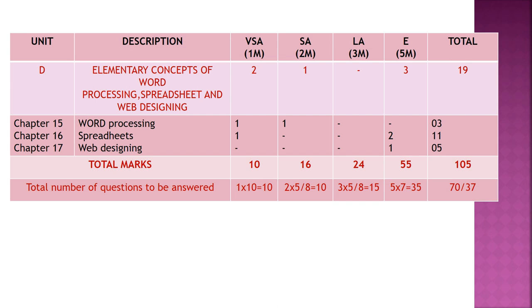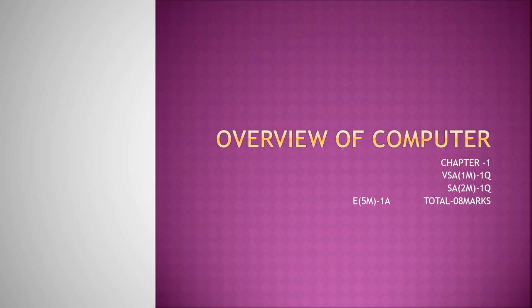Out of 105 marks, you will attend your question paper out of 70. The theory part is 70 marks and the practical part is 30 marks. Now let us start Chapter 1 — Overview of Computers. In this chapter, the total marks weightage is 8 marks, divided as one one-mark question, one two-mark question, and one five-mark question.